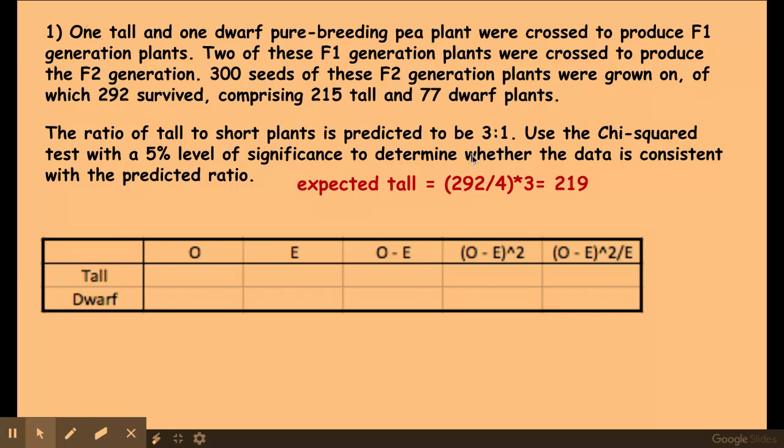So what I do is 292 divided by 4, because my expected ratio is 3 to 1. So if I add 3 to 1 together that equals 4. And then I times that by 3 because my expected total individuals is the ratio for 3.